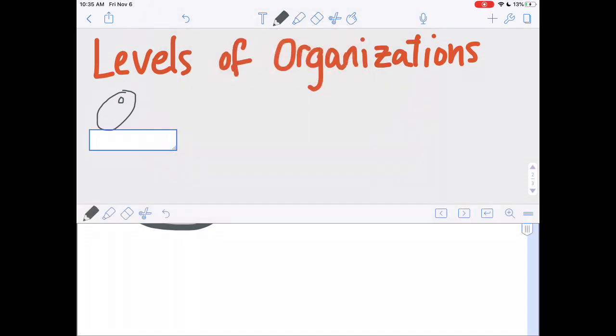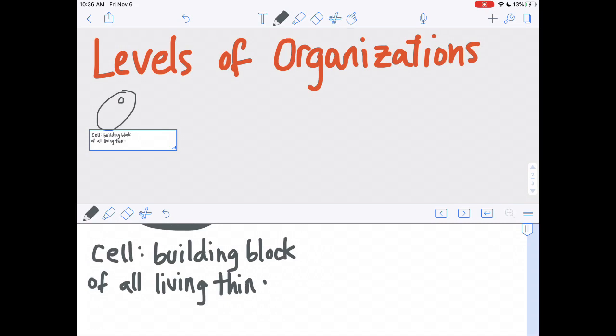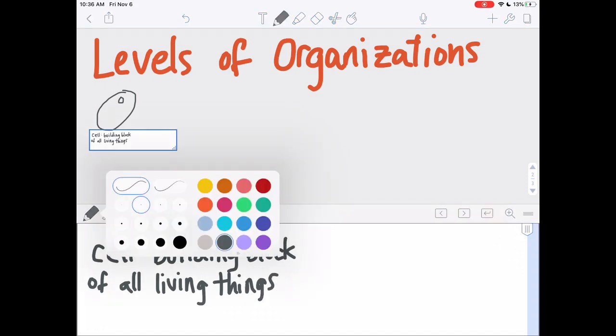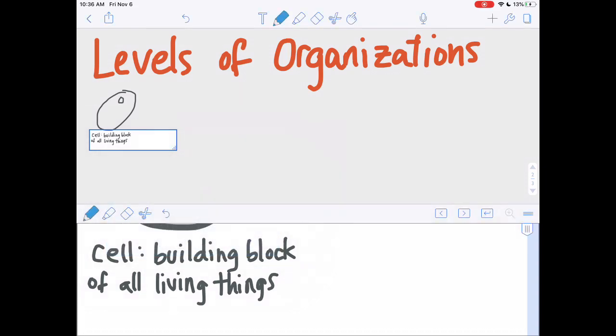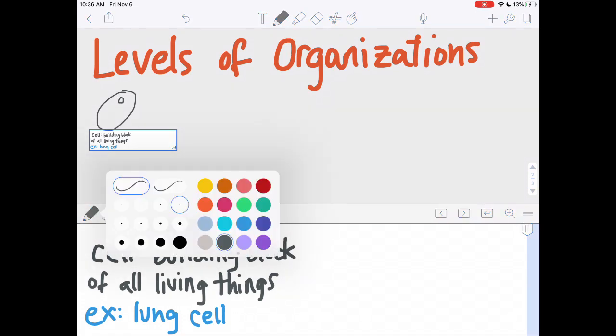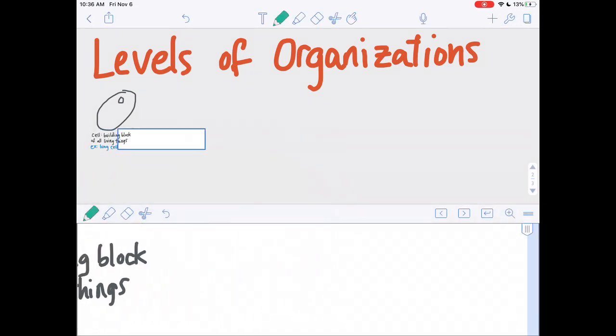So this is a cell and it is the building block of all living things. And an example of that would be like a lung cell. So we're going to say EX for example and then we're going to say a lung cell. All right, so cells are the basic building blocks of all living things and cells make up this next part.